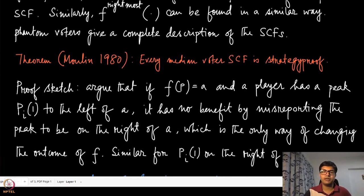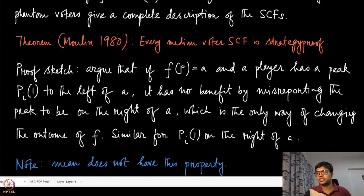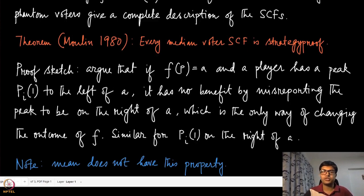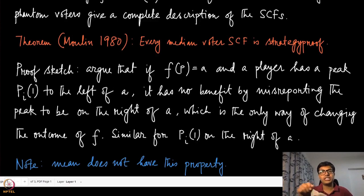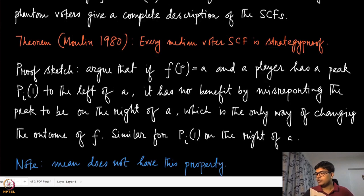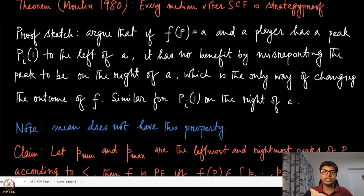Here is an important result due to Moulin (1980): every median voter social choice function is strategy-proof. The proof is not very different from how we argued in the previous module. The only way an agent can alter the median is by going to the other side of the median. In single-peak preferences, reporting one's peak on the other side of the median yields an outcome that is less preferred than the current outcome. Note this is a special property of the median — means and other statistical measures do not have this property.